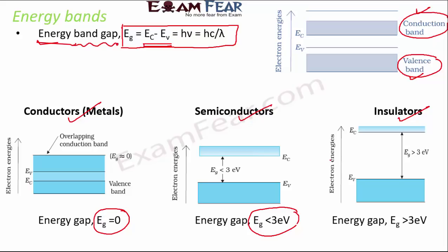In insulators, the energy gap is greater than 3 electron volts. The gap is so large that it is almost impossible for an electron to jump from the valence band to the conduction band. As a result, there are no freely moving electrons and therefore no conduction of electricity.